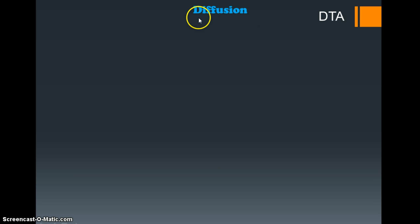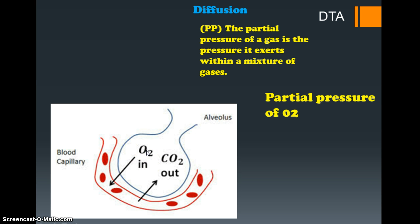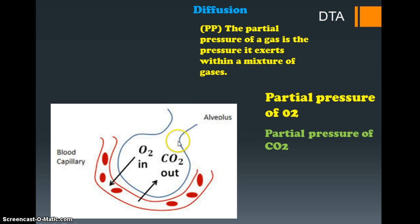The key concept here is diffusion - how gases move from one place to another. Within the air that we breathe there are different gases, including O2 and CO2, and we measure these in terms of pressure - how much pressure they're exerting on other gases within that particular area. We call it partial pressure of O2, and we could also use the word concentration. As we breathe in oxygen-rich air, we have a partial pressure of O2 within our alveoli, and also a partial pressure of CO2.